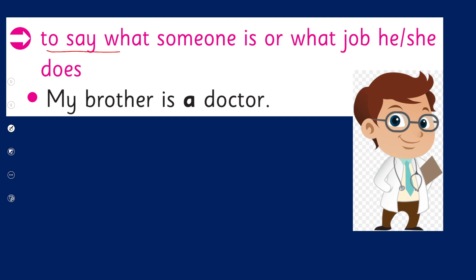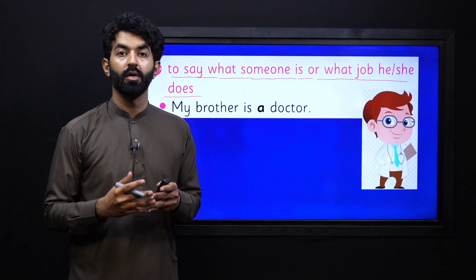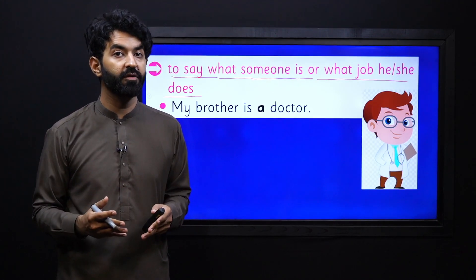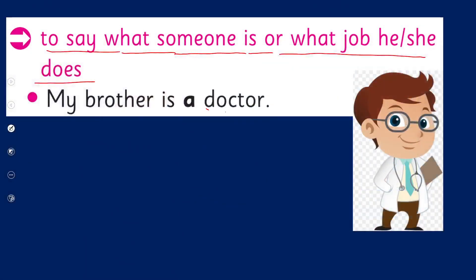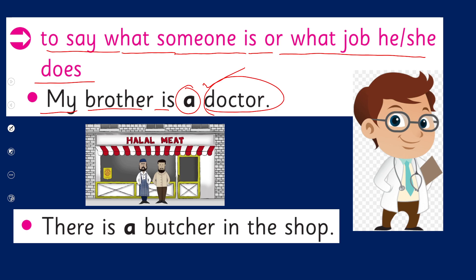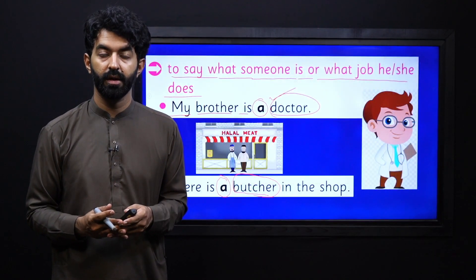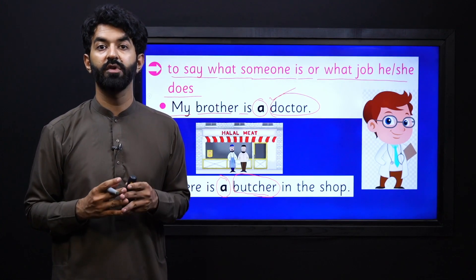We use it to say what someone is or what job he or she does. For example, 'My brother is a doctor' — we are explaining and describing a job. That's why we use the article a before the profession, which is doctor. 'There is a butcher in the shop' — butcher is also a job, a profession, so that's why we are using a here. Also, we are talking about one indefinite thing, that's why we are using a.